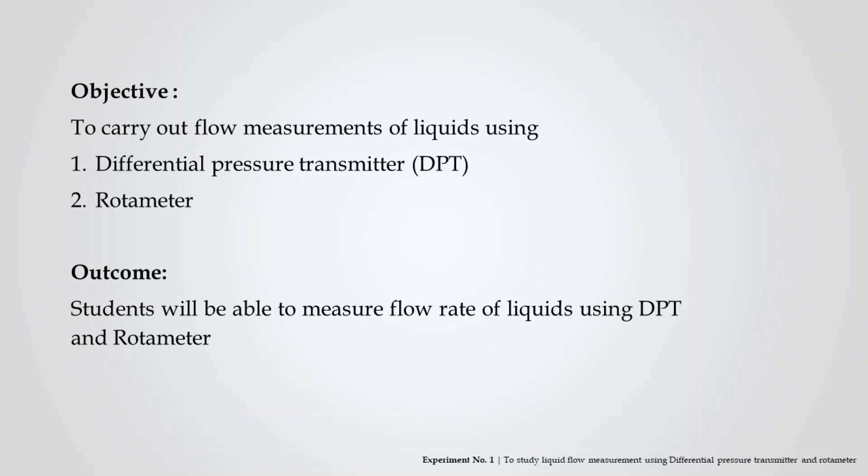The objective of this experiment is to carry out flow measurements of liquids using differential pressure transmitter (DPT) and rotameter. On completion of this experiment, students will be able to measure the flow rate of liquids using DPT and rotameter.